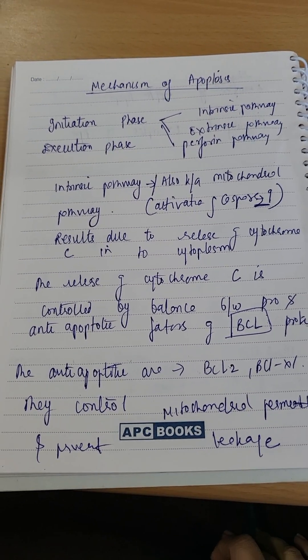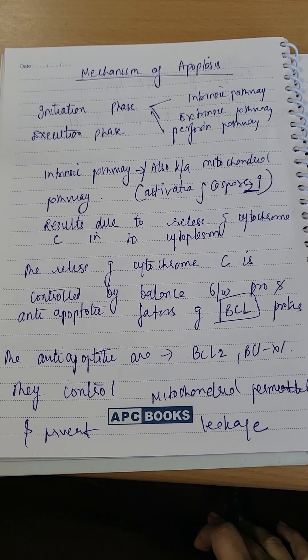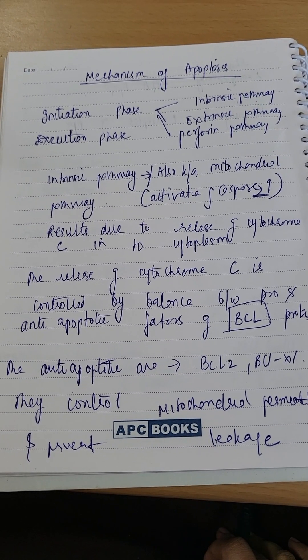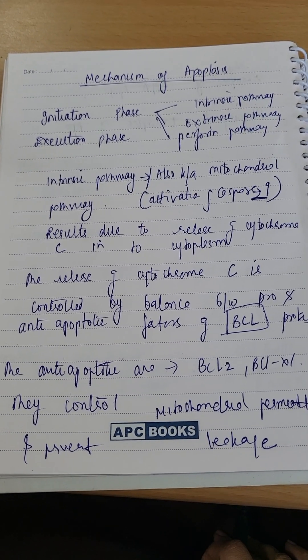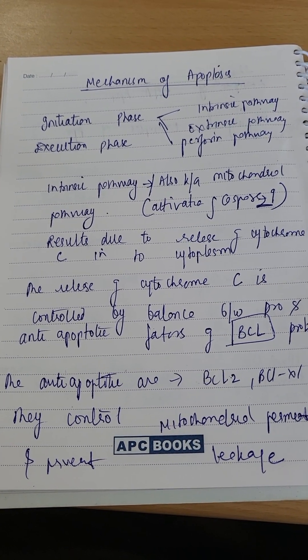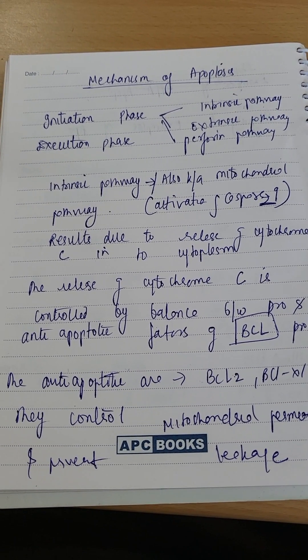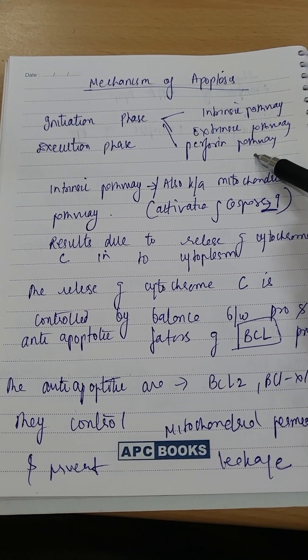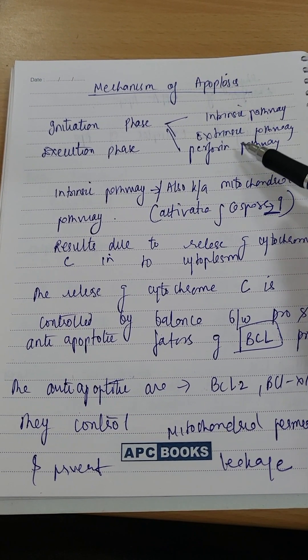Hello friends, let's study the mechanism of apoptosis. We have divided it into initiation phase and execution phase. Initiation phase is further divided into intrinsic pathway, extrinsic pathway, and perforin pathway. There are three pathways.